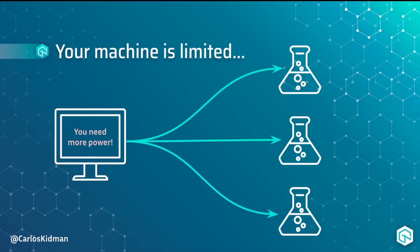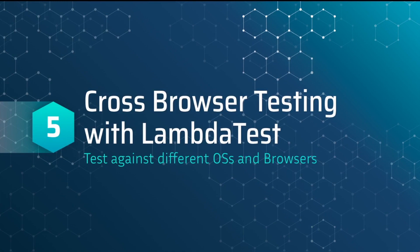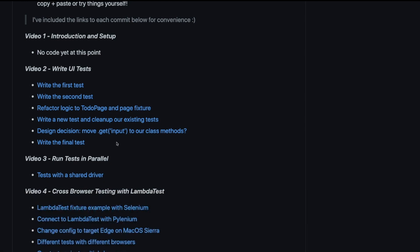Although running tests in parallel is considered mandatory in a lot of frameworks, you'll quickly realize that your machine is limited and can only handle so many tests at a time. Eventually, you will need to scale your compute power so you can run more tests in parallel, especially as your automated suite grows. LambdaTest happens to include scaling in their cloud solution as well, which brings us to the final module: cross-browser testing with LambdaTest. Please post any questions in the comments below or at community.lambdatest.com. See you in the next video.